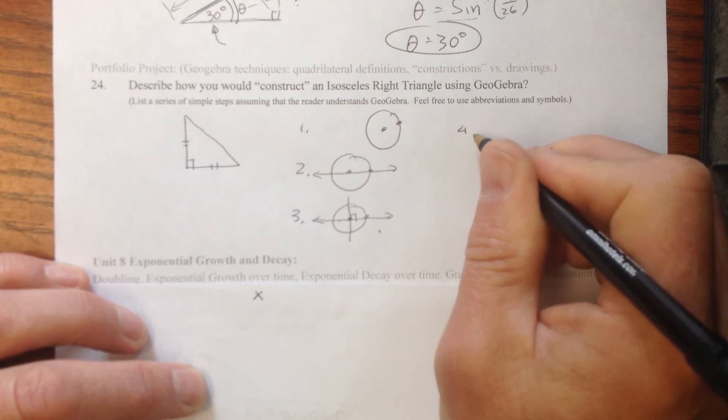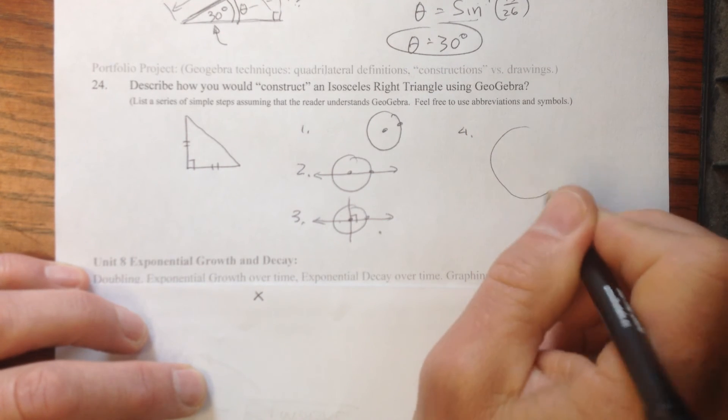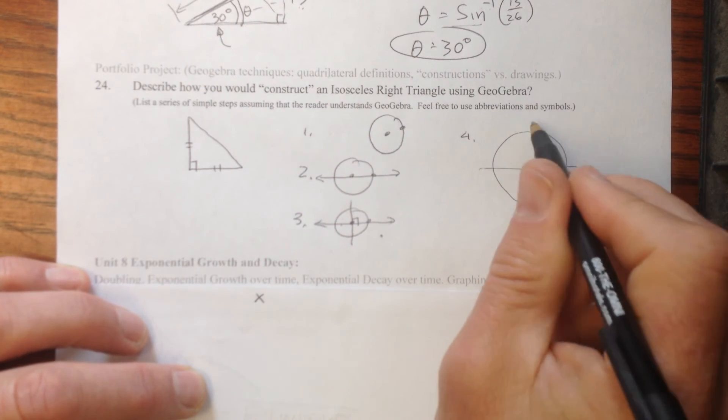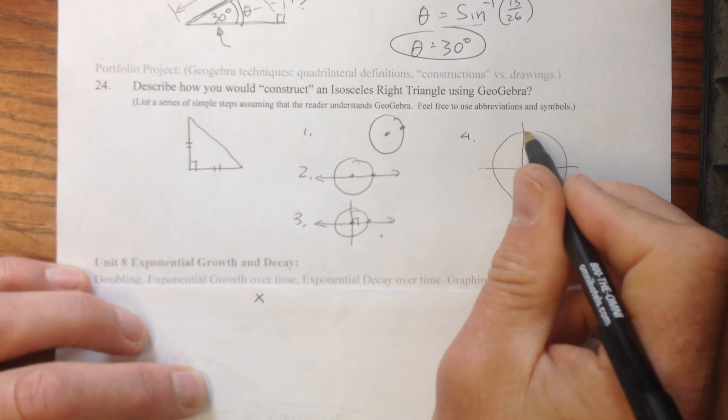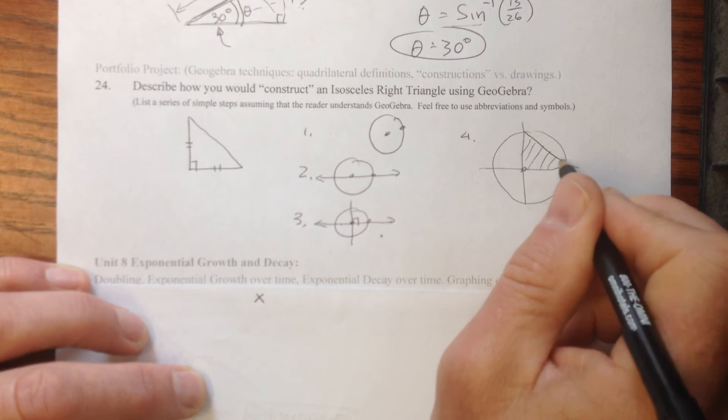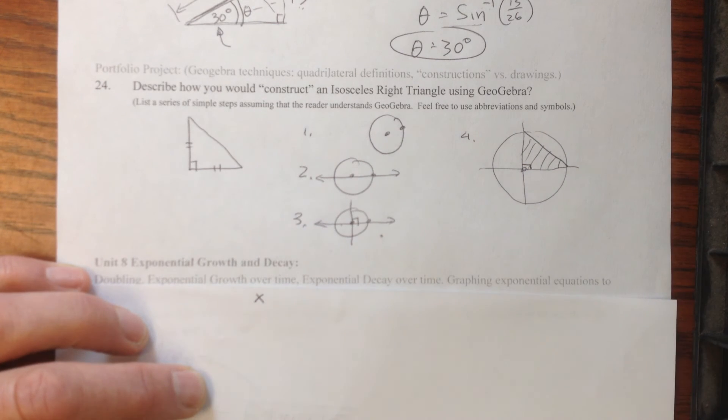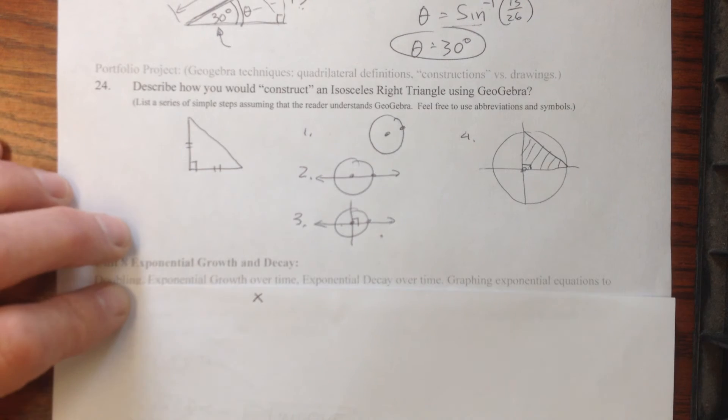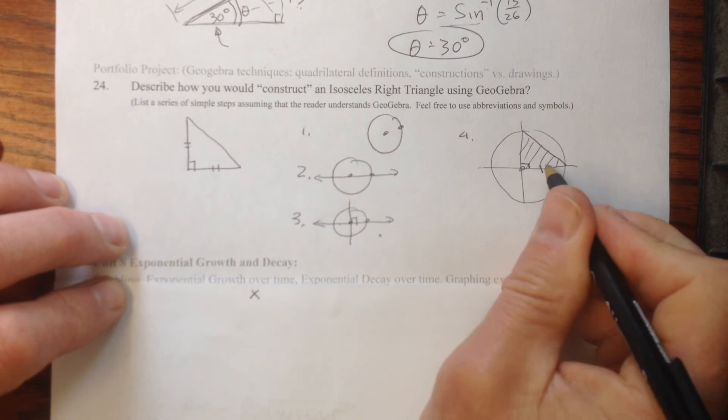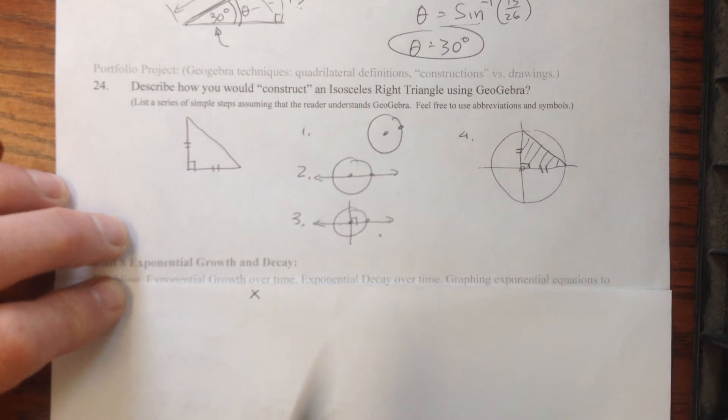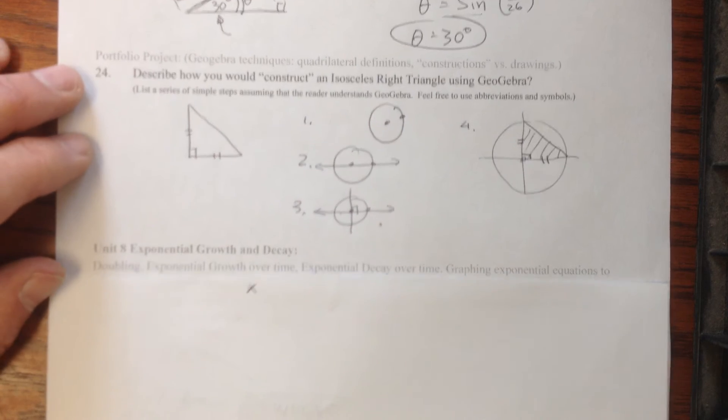And then step four would be, I'm going to zoom in a little bit, there's our circle, and I'm just going to connect these like that and shade that in. And I know that because I told the computer to make a perpendicular. So I might describe that in words, but that is the concept, that we use circles to measure things that are the same length, and that would make it isosceles.